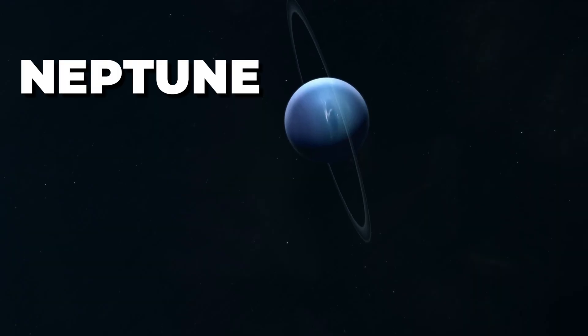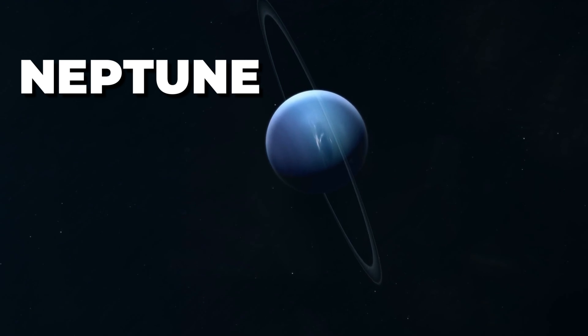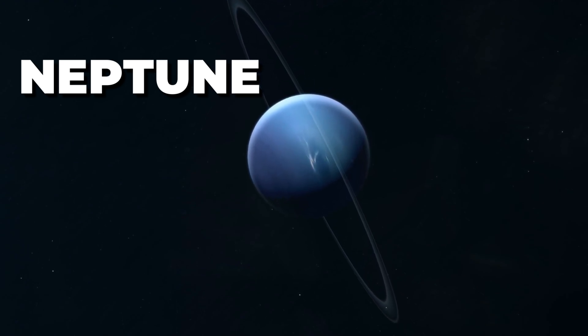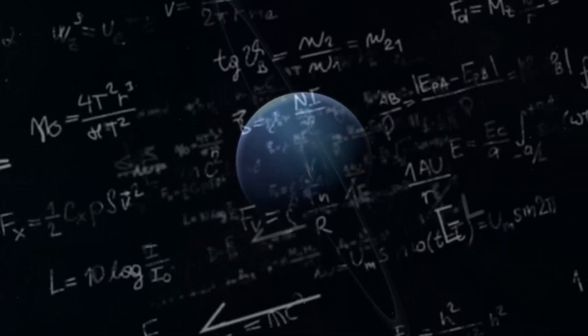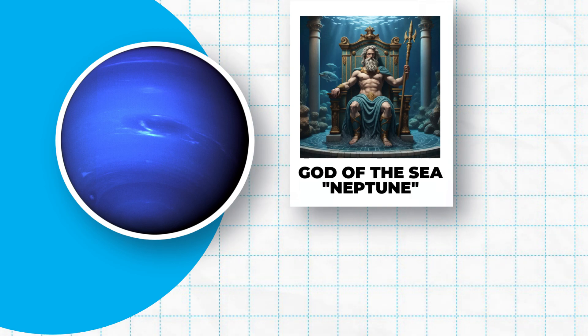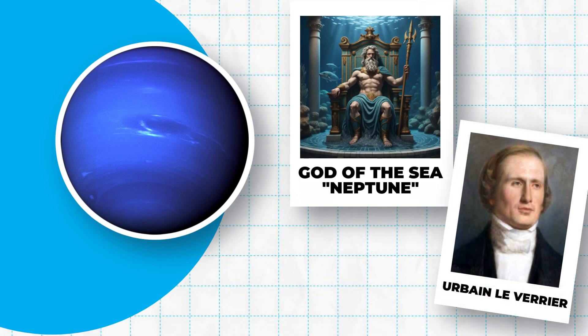Neptune is a distant gas giant with a dark, cold, frigid atmosphere and supersonic winds, making it one of the most turbulent planets in our solar system. Discovered through mathematical calculations, Neptune owes its name to the Roman god of the sea, as suggested by Urban Le Verrier, French astronomer and mathematician.